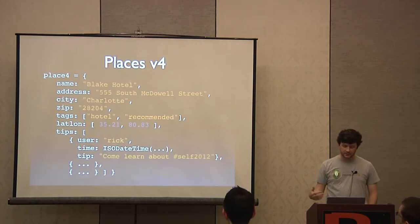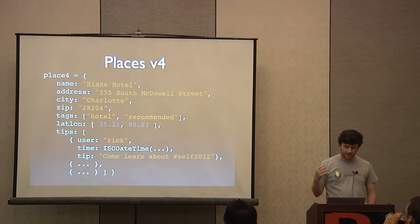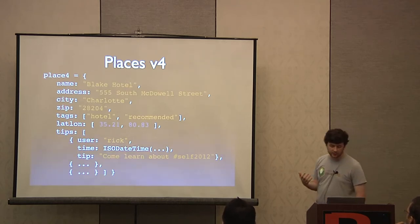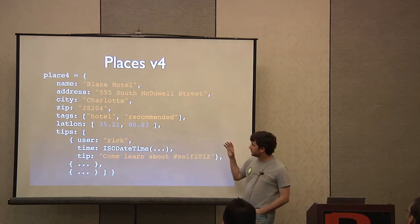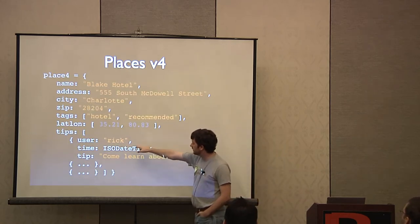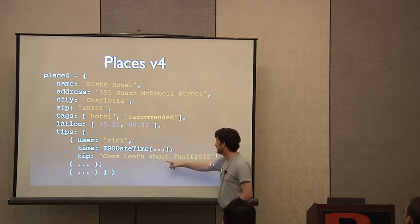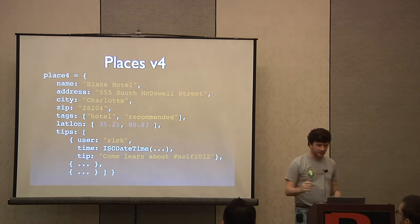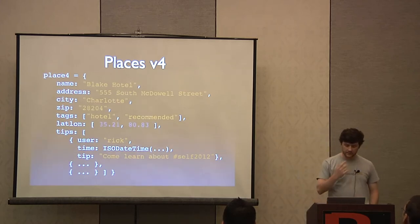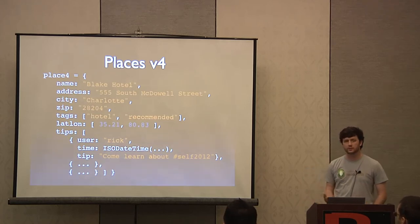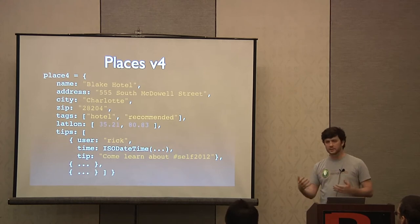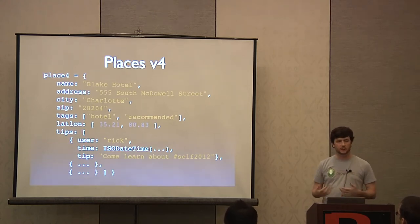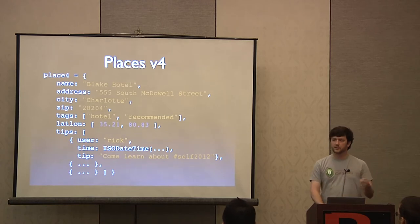Another thing we might want to do is allow tips to be stored with a place. We add another array field and embed a list of documents — with user, a timestamp stored as an ISO datetime, and a tip string. This might be our final version of the places schema. This is the process you'd go through with a MongoDB data modeling exercise: it's not so much figuring out your CREATE TABLE syntax, but figuring out what you want documents to look like, often doing examples and iterative development in the shell.